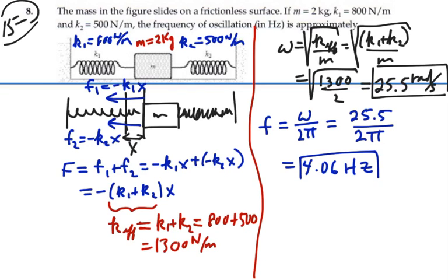So this system, once we characterize it from one spring constant, has a frequency of 4.06 hertz.